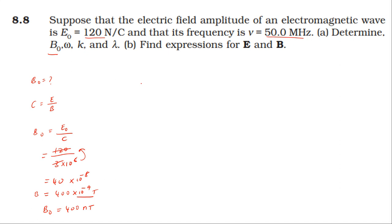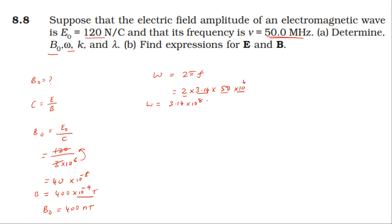Next, find the angular frequency ω. The formula is ω = 2π × frequency. With frequency = 50 megahertz = 50×10⁶ Hz, and π ≈ 3.14: ω = 2 × 3.14 × 50×10⁶ = 3.14×10⁸ radians per second.